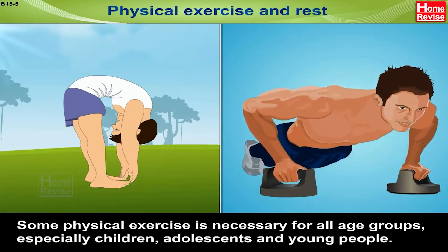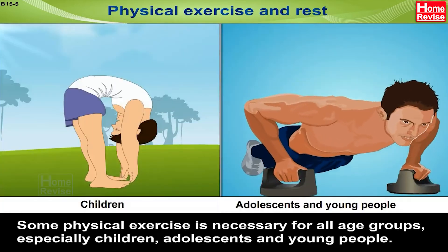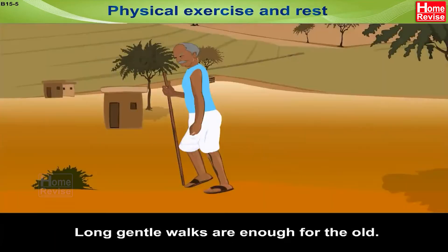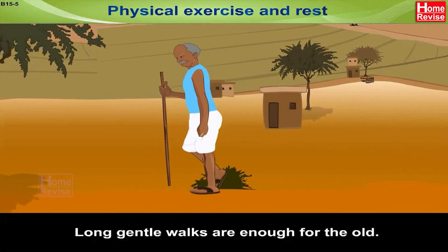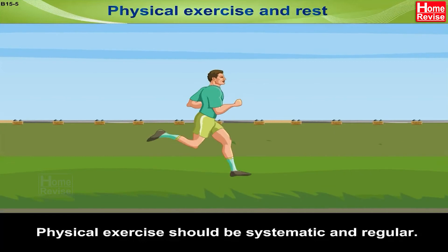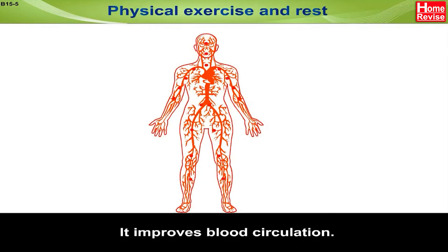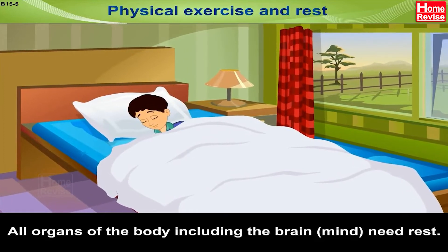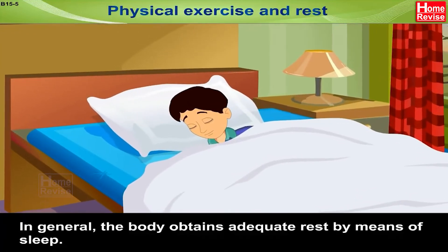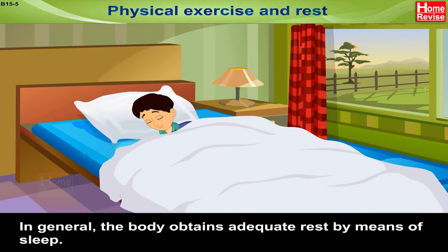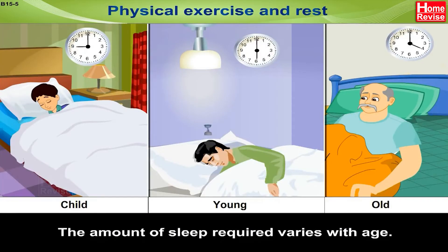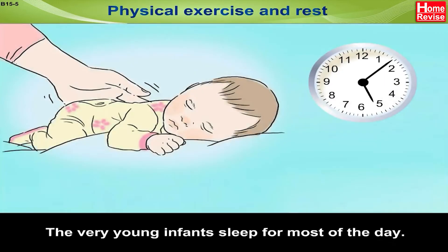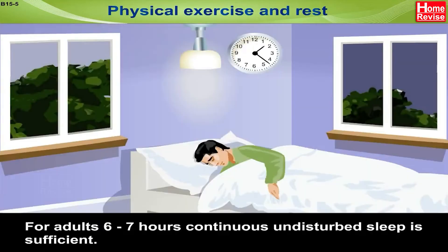Some physical exercise is necessary for all age groups, especially children, adolescents and young people. Long gentle walks are enough for the old. Physical exercise should be systematic and regular; it improves blood circulation. All organs of the body, including the brain, need rest. In general, the body obtains adequate rest by means of sleep. The amount of sleep required varies with age — very young infants sleep for most of the day, while for adults, six to seven hours of continuous undisturbed sleep is sufficient.